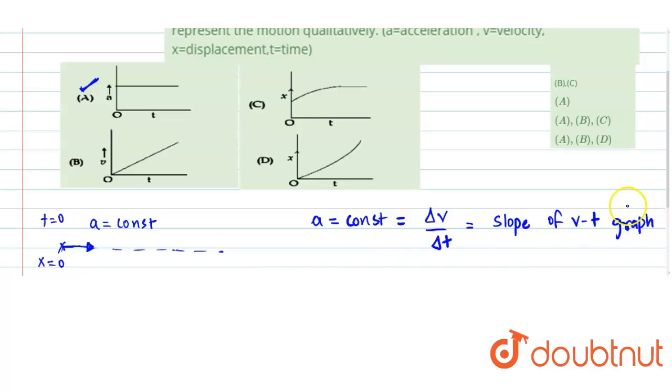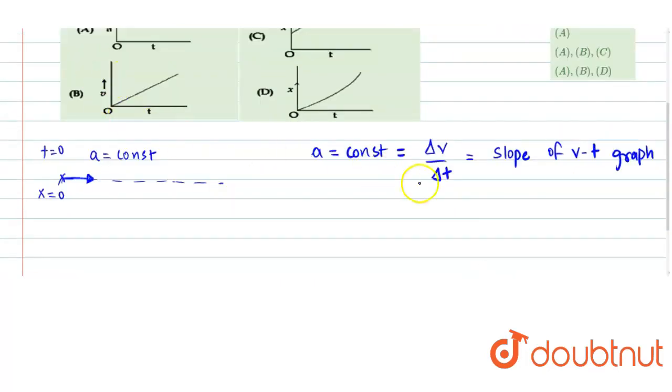Correct. And that makes the slope of v-t graph as constant. And at t equals 0, as the particle has started from rest, velocity has to be 0. That means slope is constant and the graph has to start from origin.